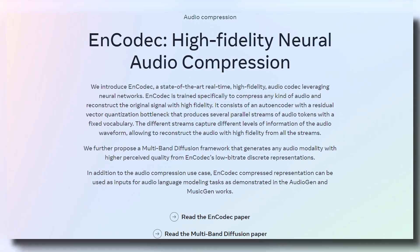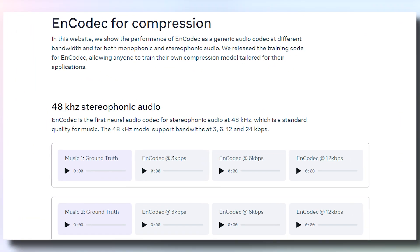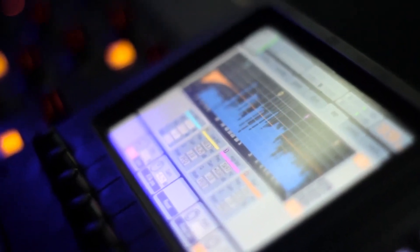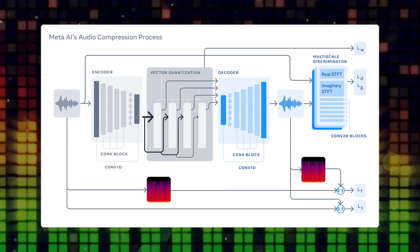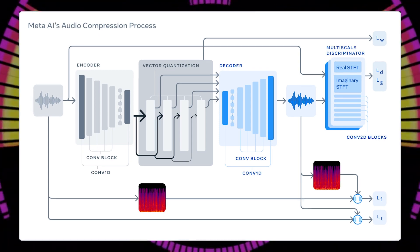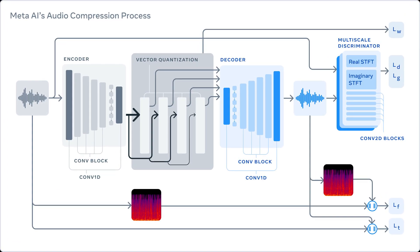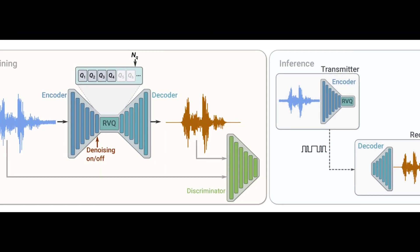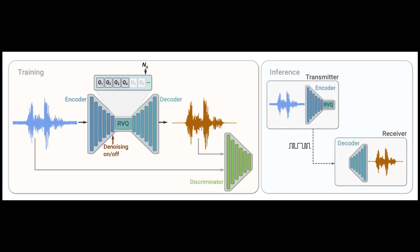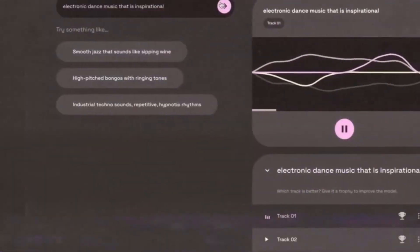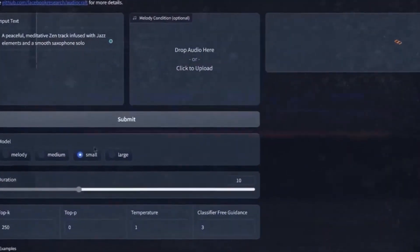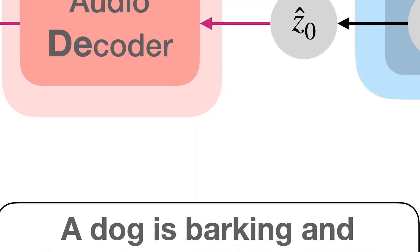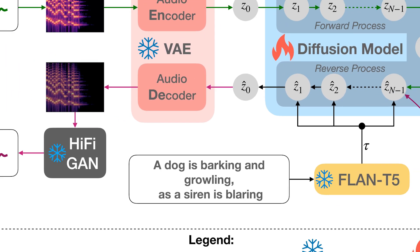EnCodec serves as a neural audio codec engineered to compress audio files without compromising quality. Initially introduced by Meta in October 2022 to enhance voice communication during poor network conditions, it has now evolved and become an integral part of AudioCraft's architecture. Its operation involves mapping raw audio signals into one or multiple parallel streams of distinct tokens through a neural network encoder. These tokens are subsequently compressed using established algorithms like Huffman coding or arithmetic coding, then decoded back to their original audio format using a neural network decoder. In cases where the compression process induces noise or distortion, a diffusion-based approach is employed to mitigate imperfections and enhance clarity.